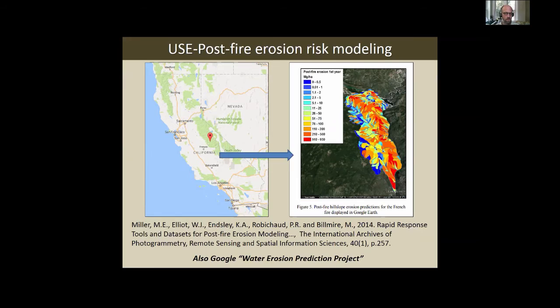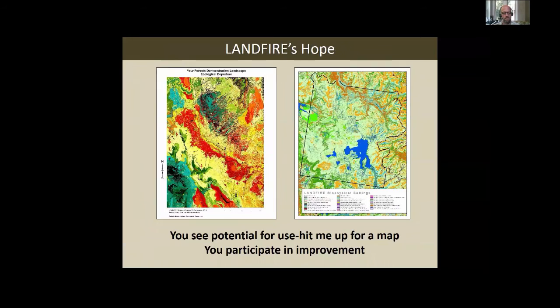One of my favorite uses is connecting fire and water. Miller and others are using Landfire data to model post-fire erosion risk out West — a huge issue, since fire followed by mudslides is a real threat to municipal water supplies and biodiversity in streams. Check out the Water Erosion Prediction Project — you can download that tool by Googling it. Our hope is you'll see a use for Landfire in your work, then provide us feedback. Hit me up for a map — I can show you how to make one or make maps for you. The easiest thing to do is throw a Landfire map into your next document and give it a look.